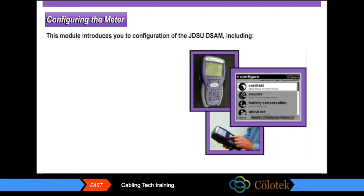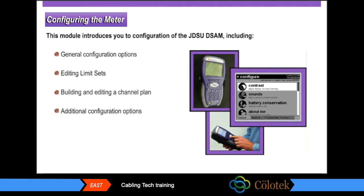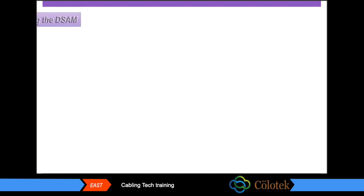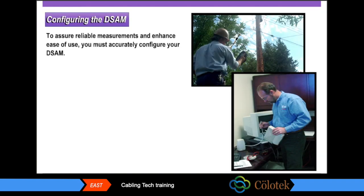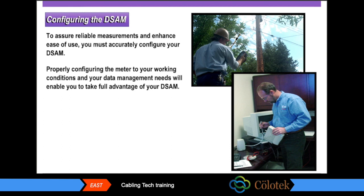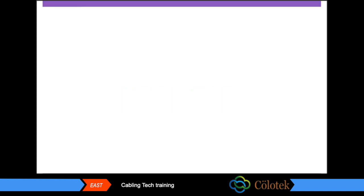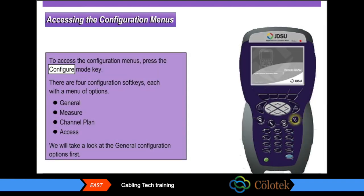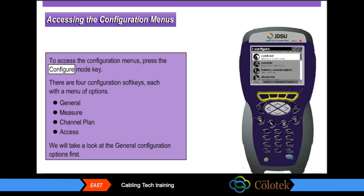Configuration of the JDSU DSAM includes general configuration options, editing limit sets, building and editing a channel plan, and additional configuration options. To assure reliable measurements and enhance ease of use, you must accurately configure your DSAM. To access the configuration menus, press the configure mode key. There are four configuration soft keys each with a menu of options: general, measure, channel plan, and access.